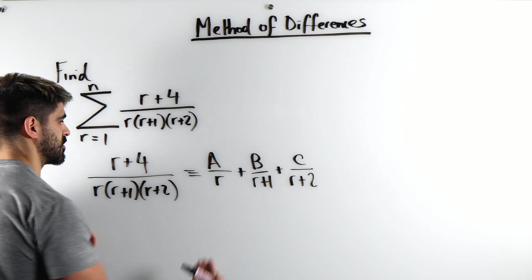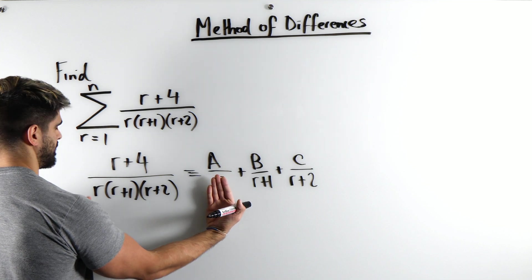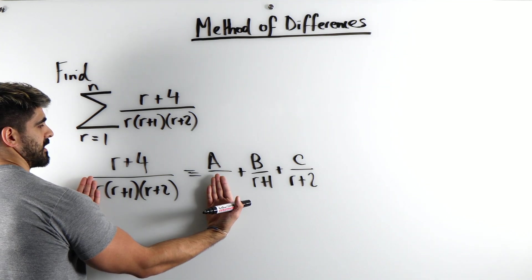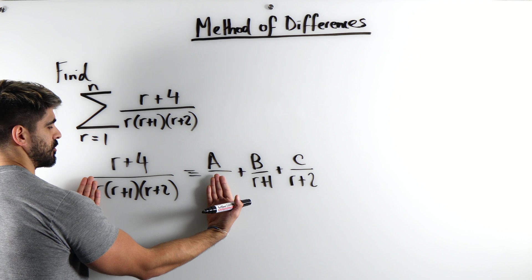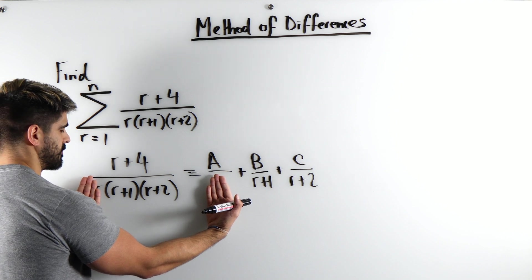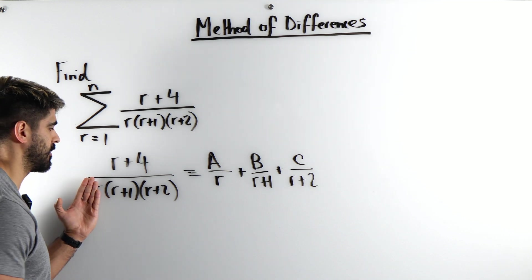And what you end up doing is you just cover this denominator on both sides. So to find A, what we're going to do is I'm going to sub in r is 0 into what's left after covering up r.